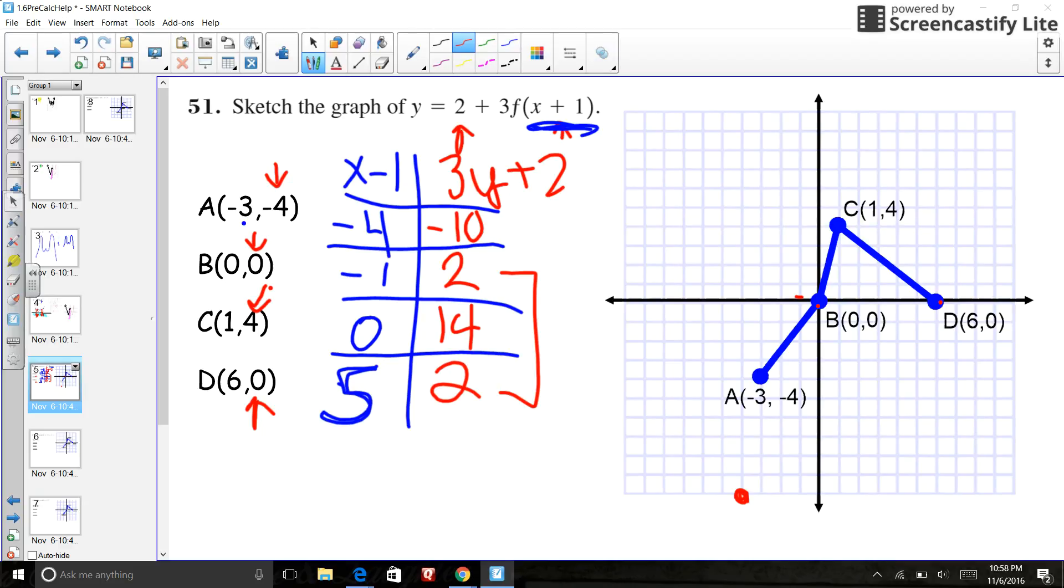Then 0, 0, this one goes to negative 1, 2. And then 0, 14. Oh, my gosh, that's way up here. I don't even have room for that. Sorry. And 5, 2.